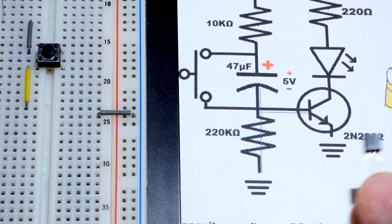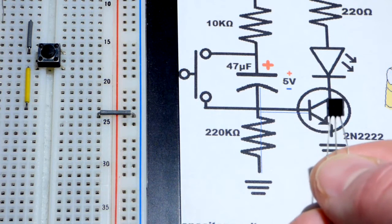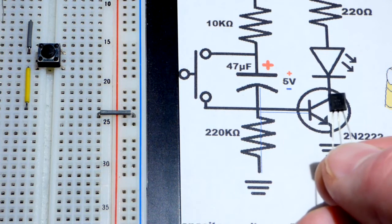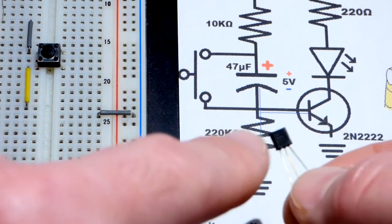It's a 2N2222. The numbers don't show up on camera though, usually. And the left pin is the emitter, middle pin is the base, right pin is the collector. That's with the flat side facing us.